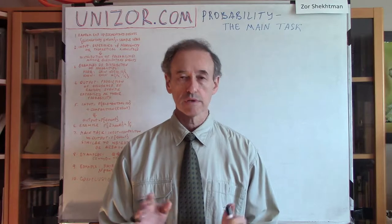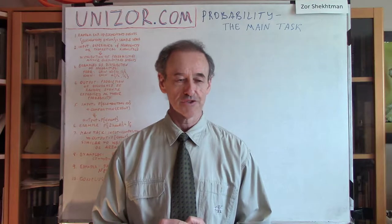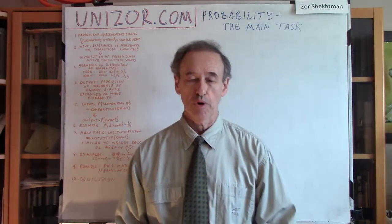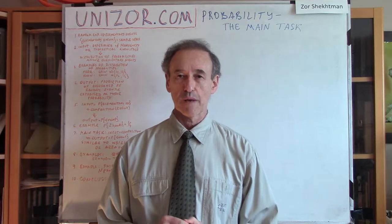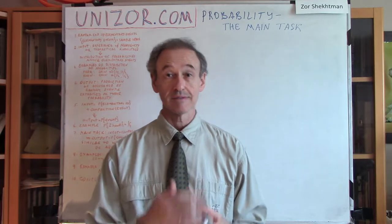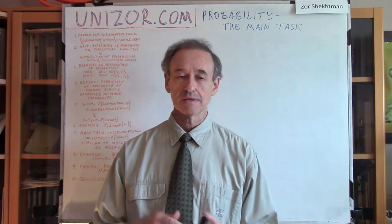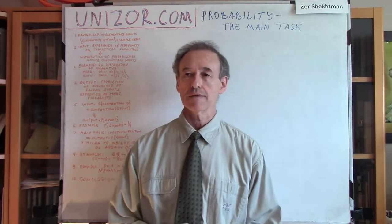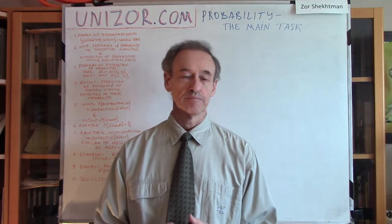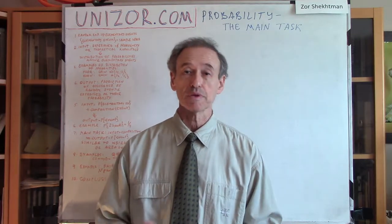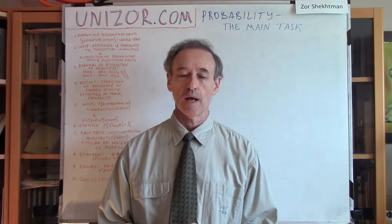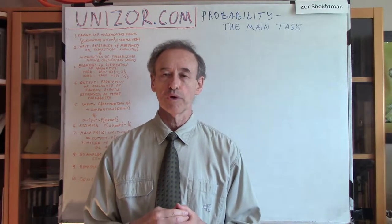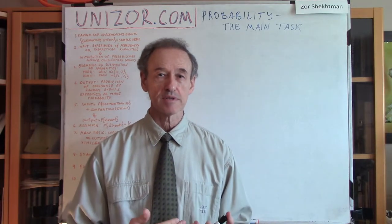Alright, after this deviation from my main purpose of this particular lecture, let me start. The theme of this lecture is the main task of the theory of probability. It might be a little presumptuous to state that the theory of probabilities has this main task. However, as a general representation of the ideas behind the theory of probabilities, it does make some sense — in as much as you can say that the purpose of arithmetic is counting, and the most important purpose of algebra is probably solving equations.